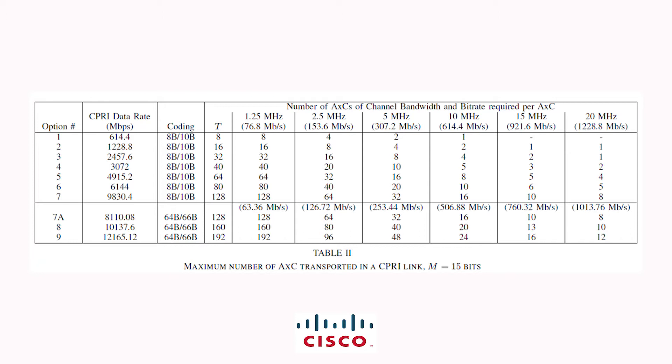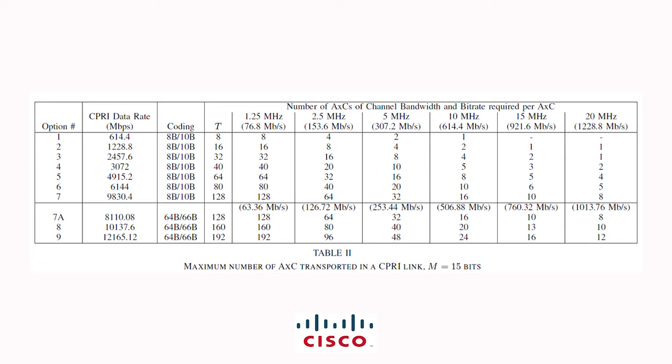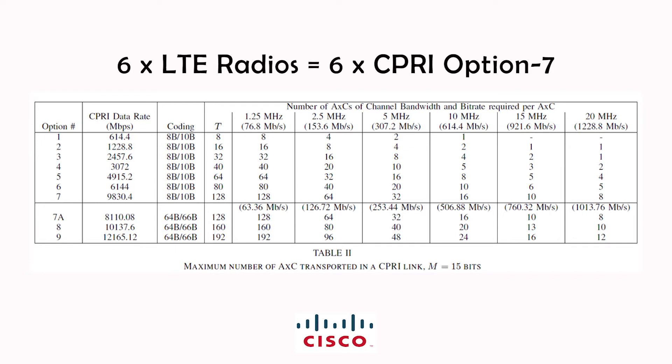Let us use this table to calculate the maximum number of AXCs required to be transported on our 4G fronthaul. To be able to support 4x4 MIMO on 10 MHz of channel bandwidth over three sectors, we need 12 AXCs, and that can be further supported with CPRI using at least option 7, or 9.8 Gbps of CPRI data rate. As an assumption, let us consider there are six LTE radios over the three sectors, each carrying the same AXCs as mentioned before. This means we will need six CPRI radio links on our fronthaul routers.